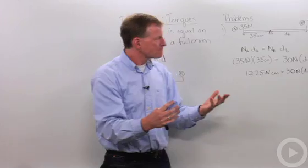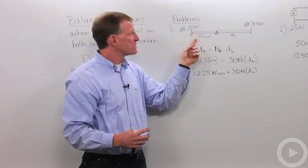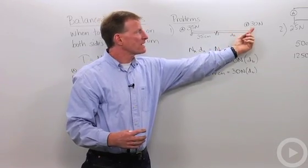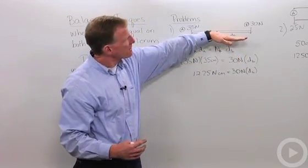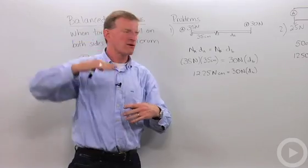Our seesaw example: let's say I've got a force over here of 35 newtons and it's 35 centimeters from the fulcrum. I've got another force over here and it's 30 newtons, but I don't know the distance it is. But notice, this is a balanced torque, so my seesaw is even.